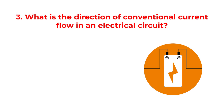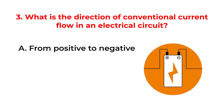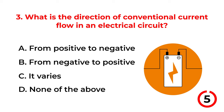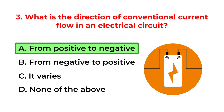What is the direction of conventional current flow in an electrical circuit? A. From positive to negative. B. From negative to positive. C. It varies. D. None of the above. The correct answer is option A: From positive to negative.